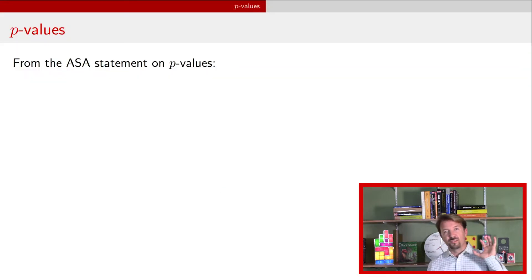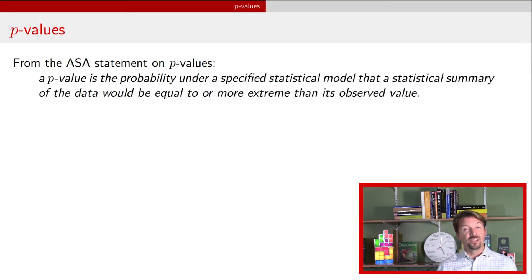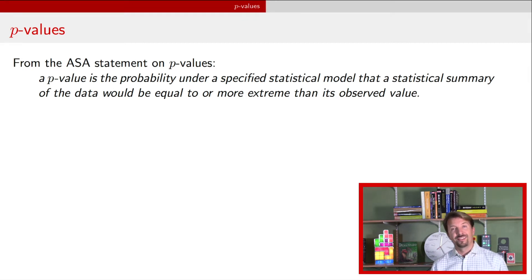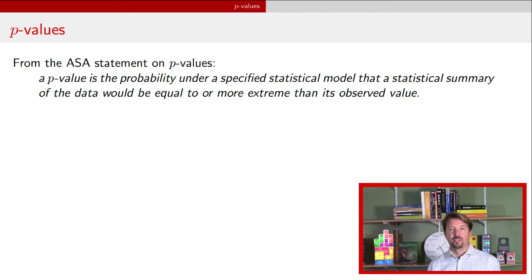I want to first just remind everybody what a p-value is, at least informally. The American Statistical Association came out with this statement: a p-value is the probability under a specified statistical model that a statistical summary of the data would be equal or more extreme than its observed value. The definition I typically give is pretty much the same thing but worded slightly differently.